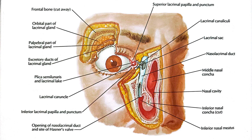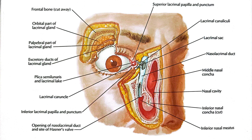The tear drainage system consists of lacrimal glands that produce tears, which keep the eye surface moist. The punctum are small openings in the inner corner of the upper and lower eyelids that drain tears into the tear ducts. Canaliculi are small ducts that carry tears from the punctum to the lacrimal sac. The lacrimal sac itself is a sac-like structure that collects tears before they drain through the nasolacrimal duct into the nose.